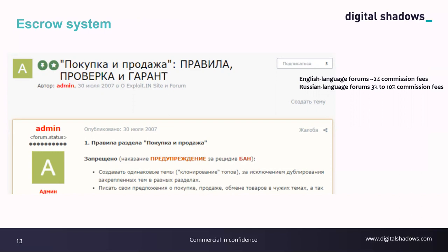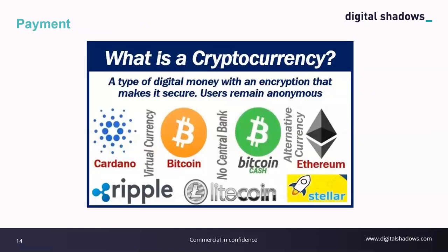Arbitration can result in reimbursement of funds, ordering compensation, or marking a user as a scammer and banning them from the forum. Payment methods on these criminal services are as expected — when paying for illicit materials, you're not going to use a standard credit card. Almost everything is purchased using cryptocurrency. The most popular options include Bitcoin, Monero, and Ethereum. Recently a number of criminal forums have started moving toward using Monero only and banning Bitcoin, mostly due to Bitcoin's volatility in conversion rates.